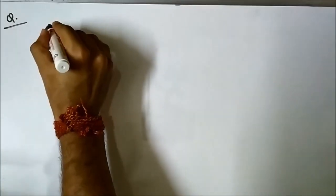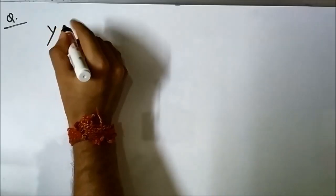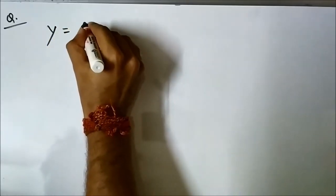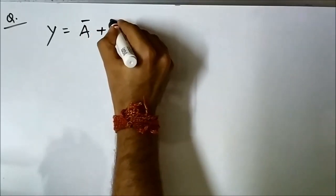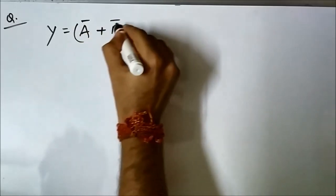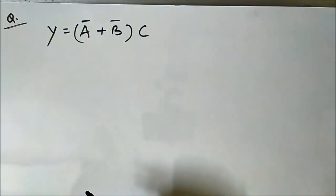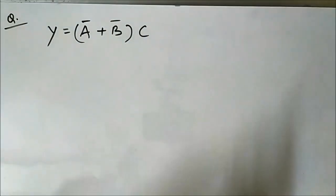Let us understand them by some questions. We will start with simple ones and then gradually move on to more complicated or complex ones. The first question is to design a digital logic gate or a combination of logic gates that gives us this output.